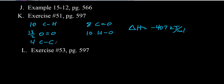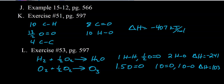Go ahead and do number 53, parts A and B — heats of formation. We need to write the equations for the formation of each substance, use bond energies to calculate delta H, then compare with the heats of formation in the back of the book. For the first one we get negative 241 kilojoules per mole, which is very close to the value for gaseous water in the back of the book: negative 241.8 kilojoules per mole.